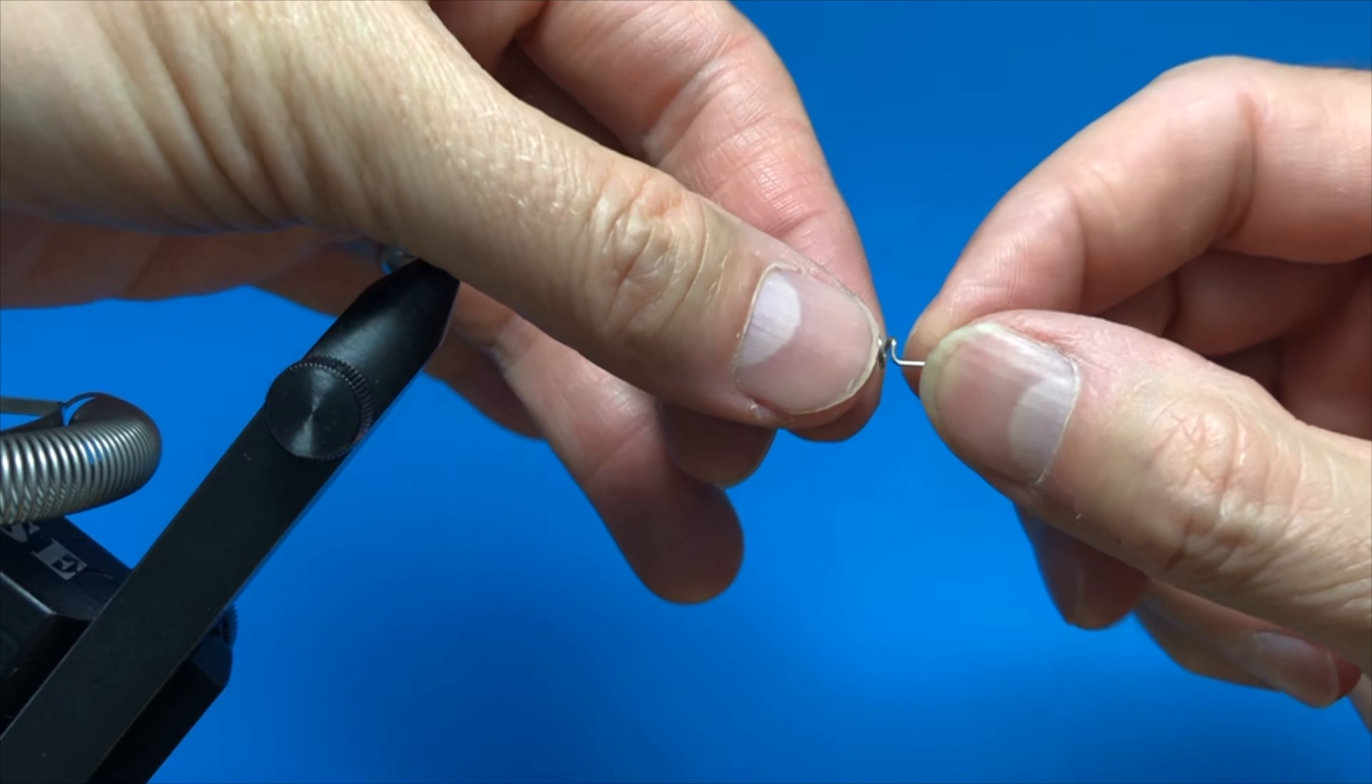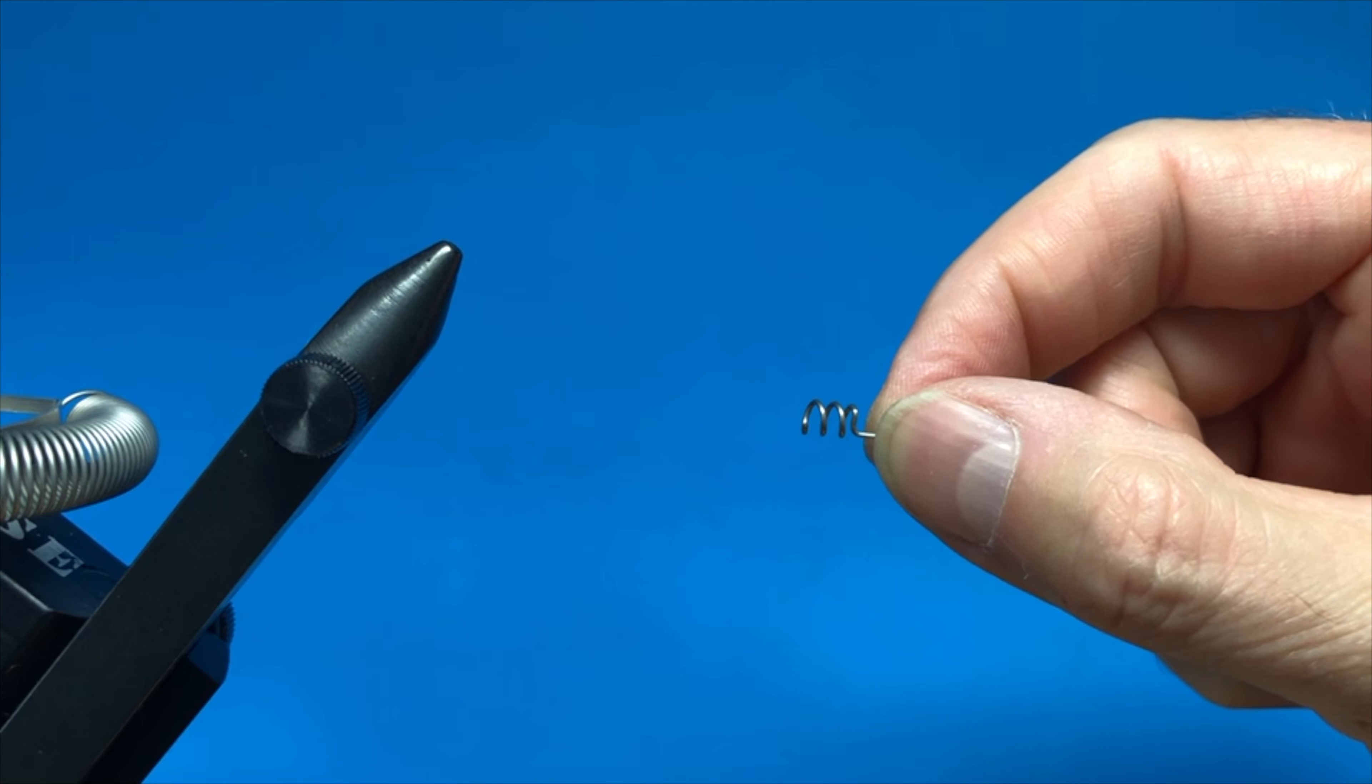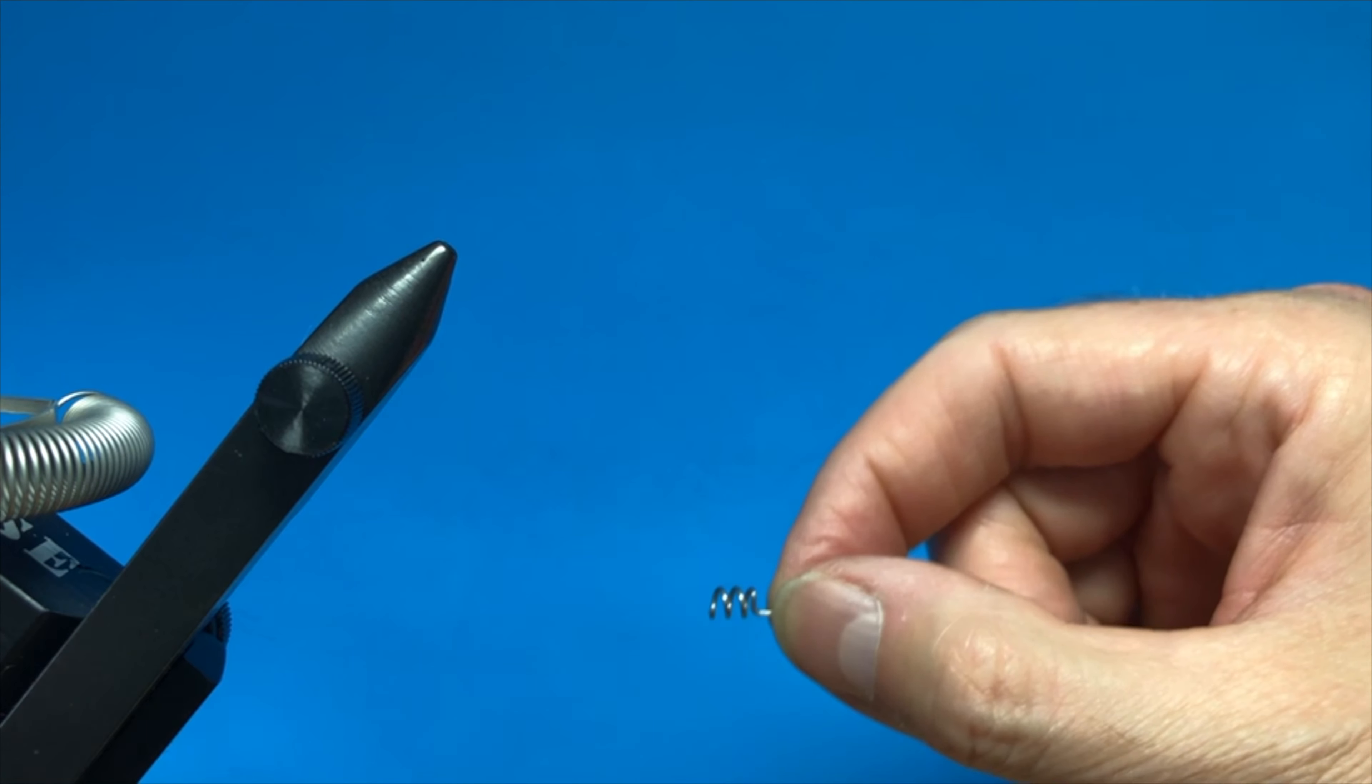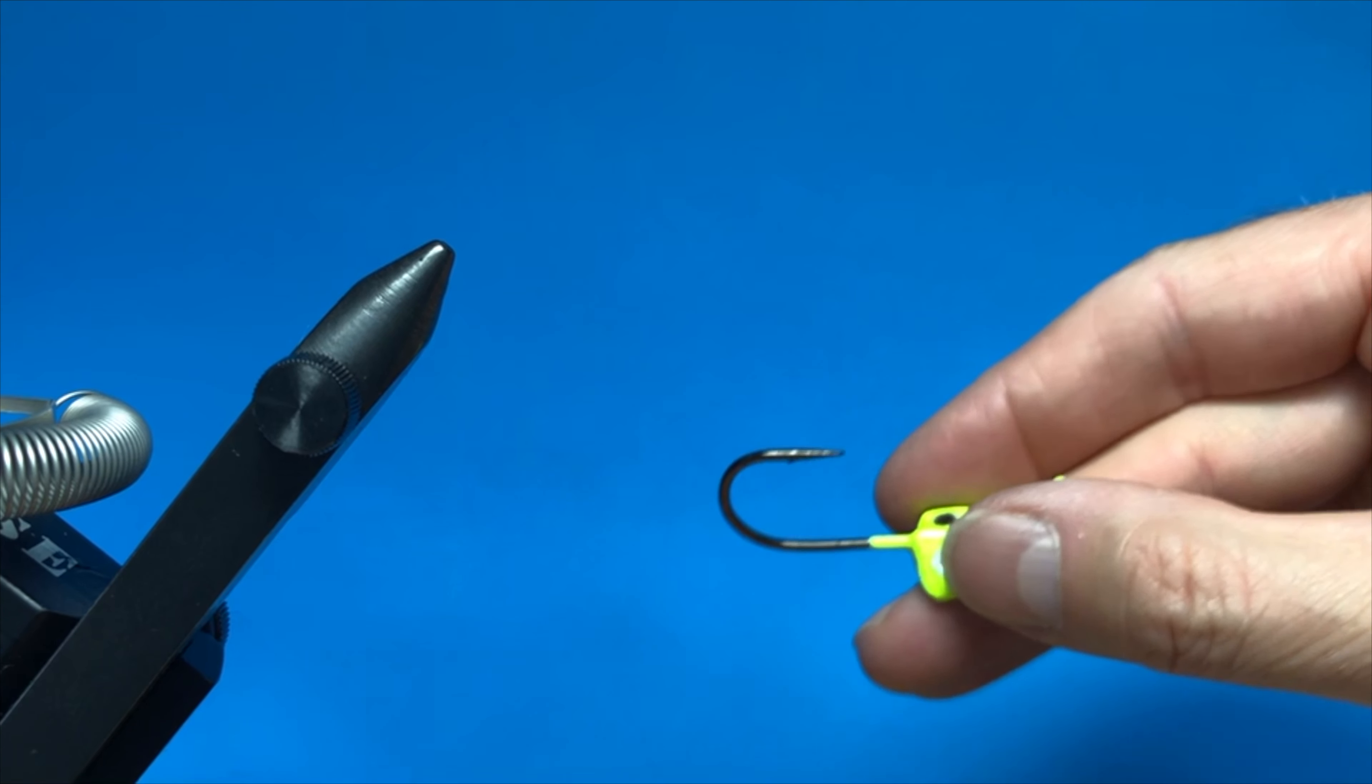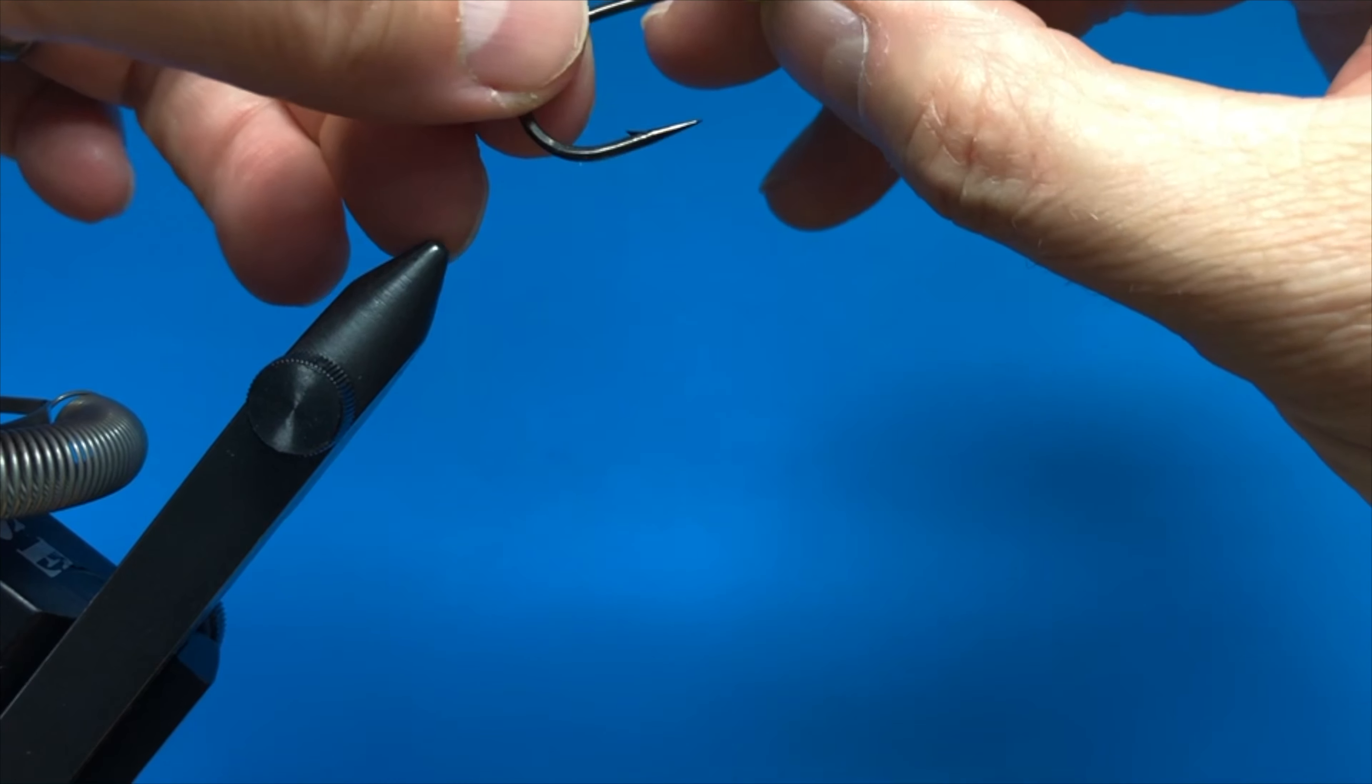This screw lock is made to tie in on a bare shank at a place where you would want to anchor a soft plastic trailer. I designed it for use on the curl tail jig, so if you're tying a curl tail jig, this is how you would use it.